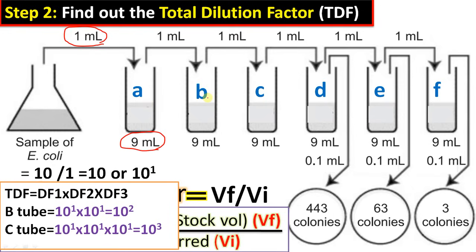In serial dilution, we dilute the sample by the same volume in successive steps. In test tube B, we have further diluted it 10 times, so the total dilution factor becomes 10^1 × 10^1 = 10^2. In test tube C it will be 10^3 — that is 10^1 × 10^1 × 10^1 — meaning this test tube is 1000-fold diluted compared to the original stock.